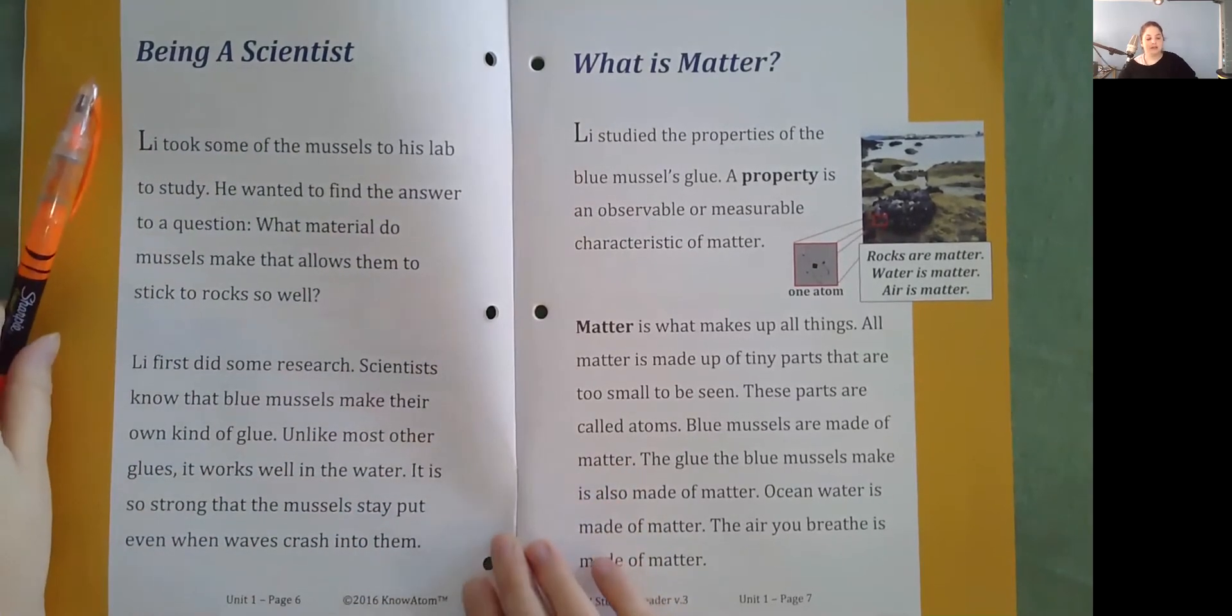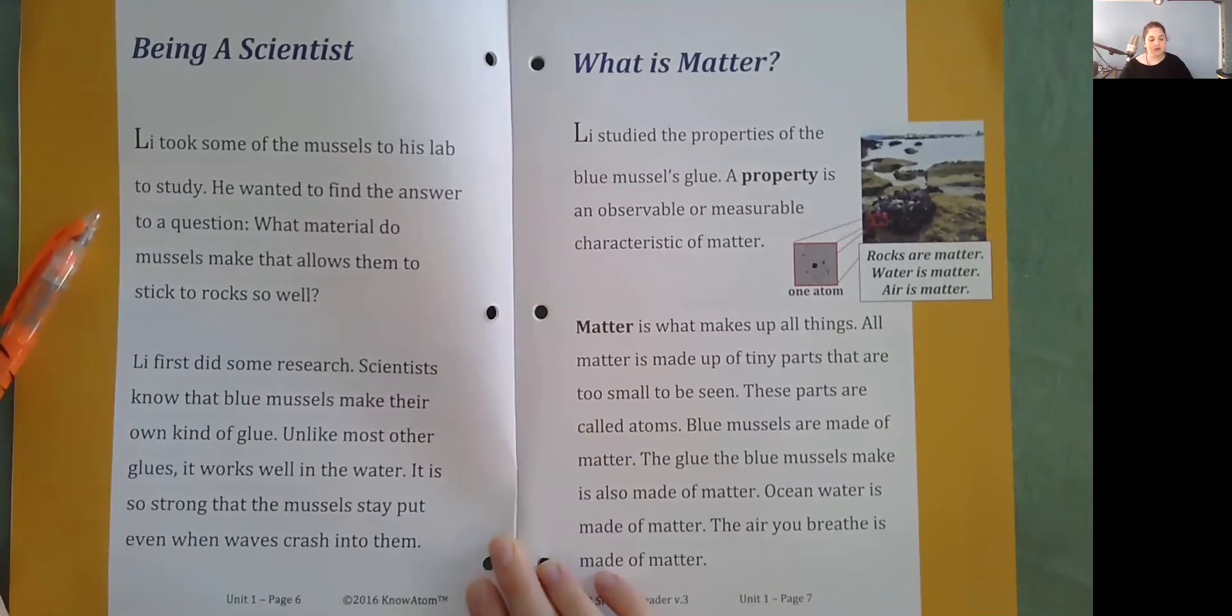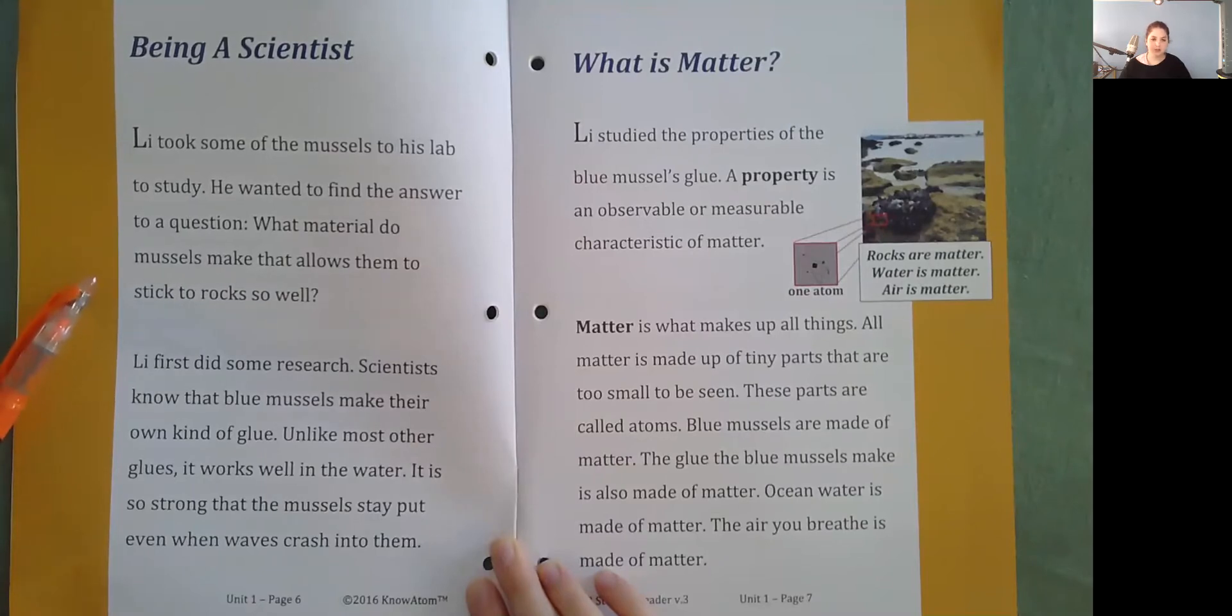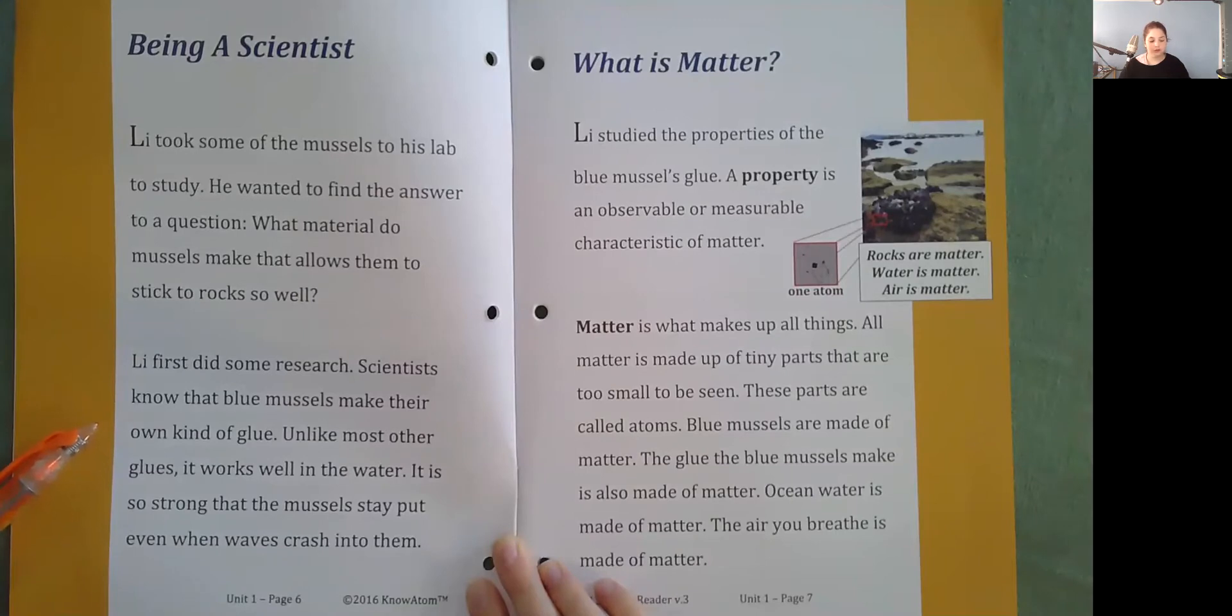Being a scientist, Li took some of the mussels to his lab to study. He wanted to find the answer to a question. What material do mussels make that allow them to stick to rocks so well? Li first did some research. Scientists know that blue mussels make their own kind of glue. Unlike most other glues, it works well in the water. It is so strong that the mussels stay put even when waves crash into them.